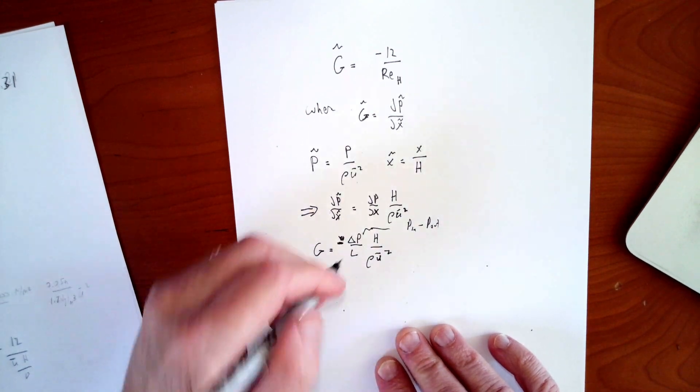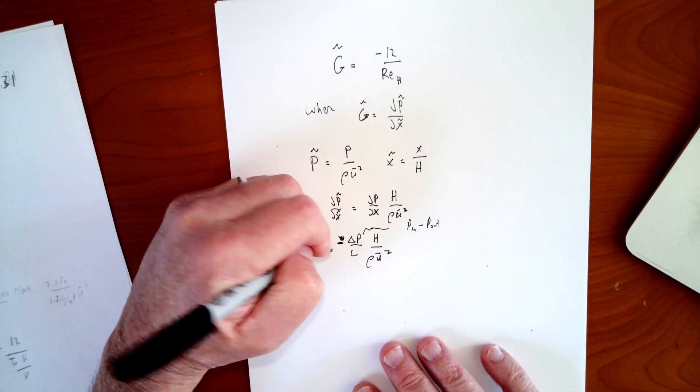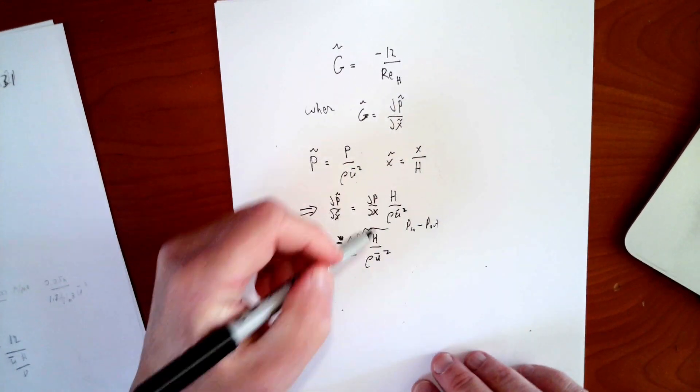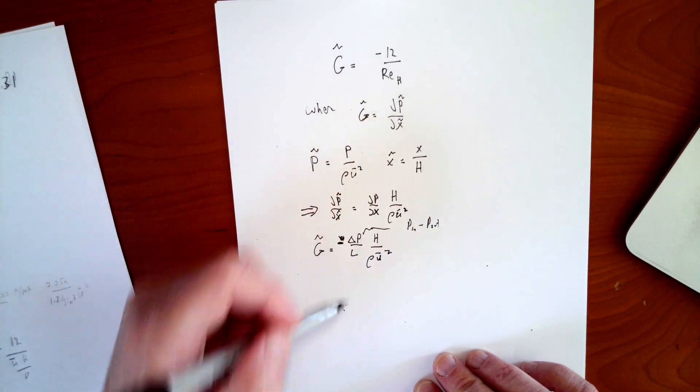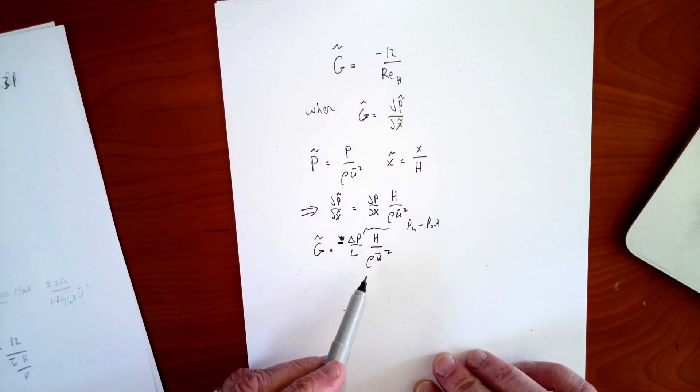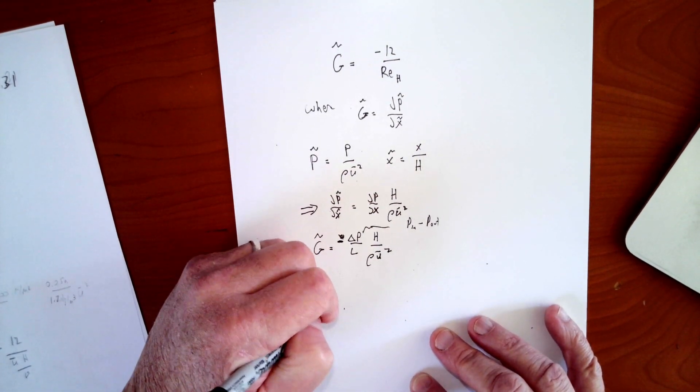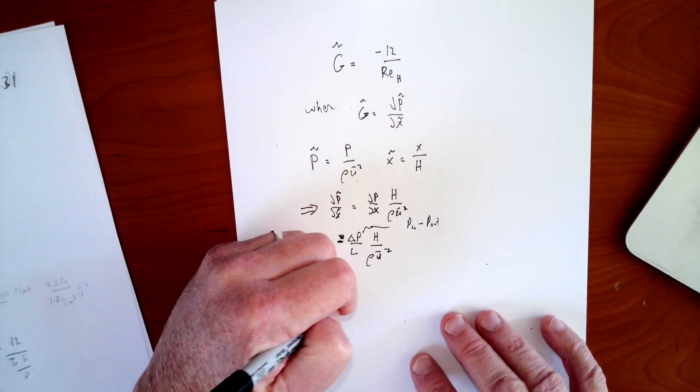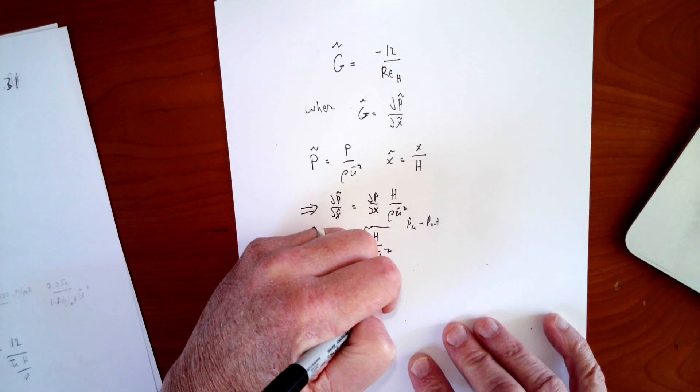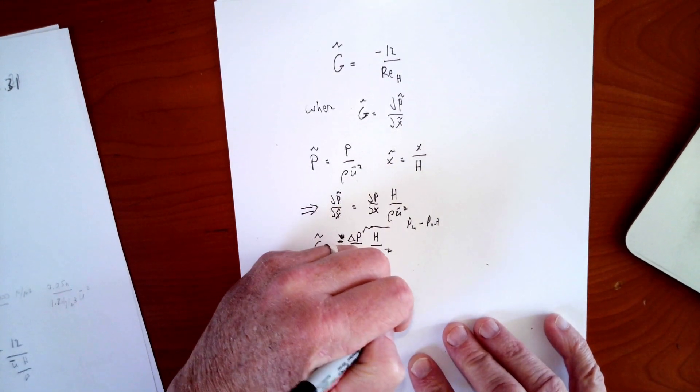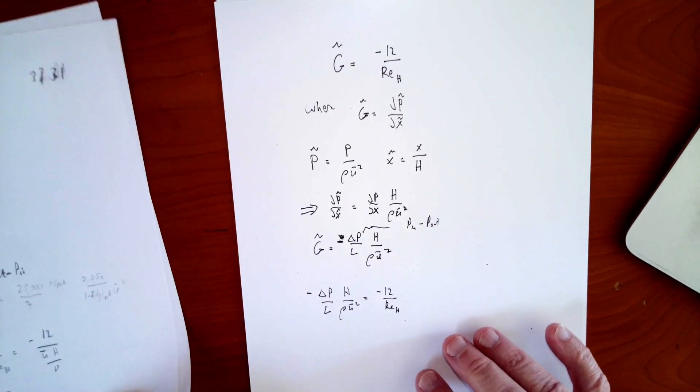And so that's my actual dimensionless g, because I have my real dp dx delta p divided by l times h rho u squared. So now I'm going to take that and set that equal to 12 over the Reynolds number. So I have delta p over l, h over rho u bar squared equals minus 12 over Re_h. So the minuses are going to cancel and I'm going to solve for u.